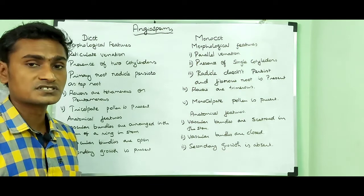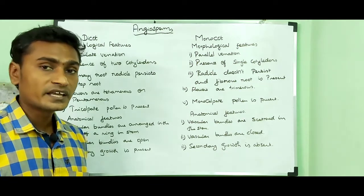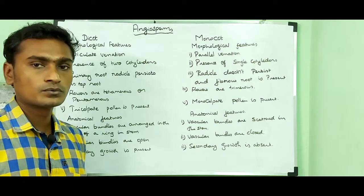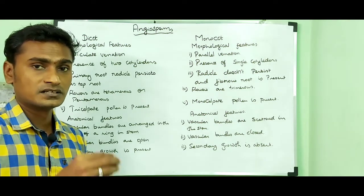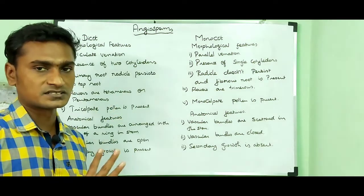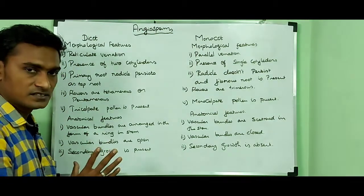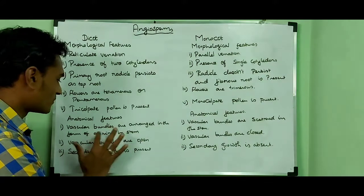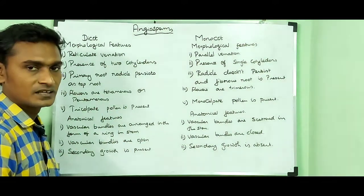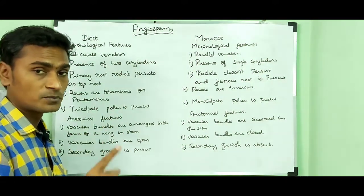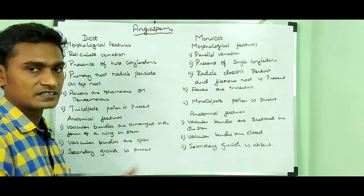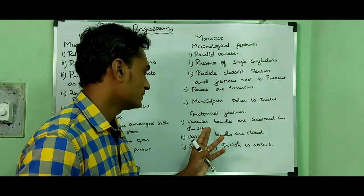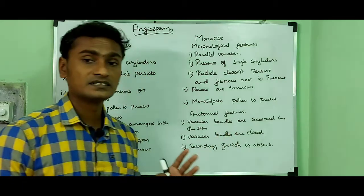Now I am going to deal with the anatomical features. You have to take a section of the leaf, stem, and root to study the internal structure. In dicot stems, vascular bundles are arranged in the form of a ring. In the case of monocot plants, vascular bundles are scattered in the stem.